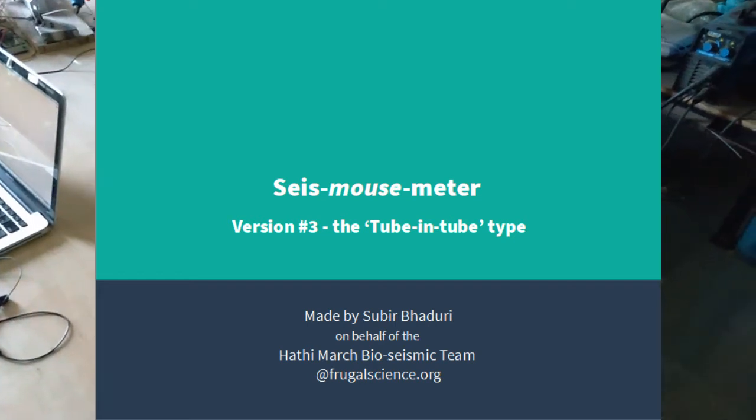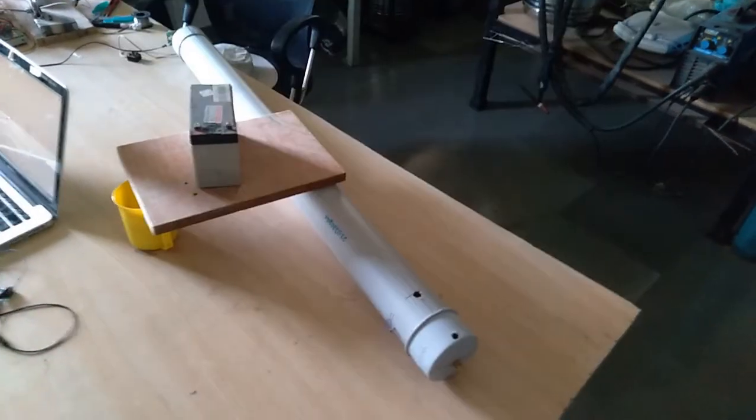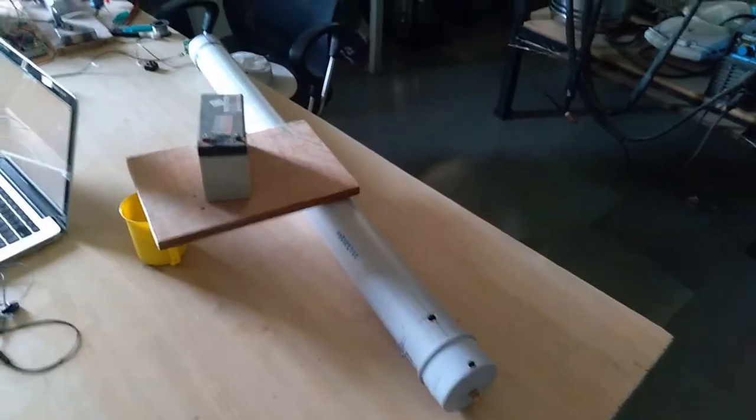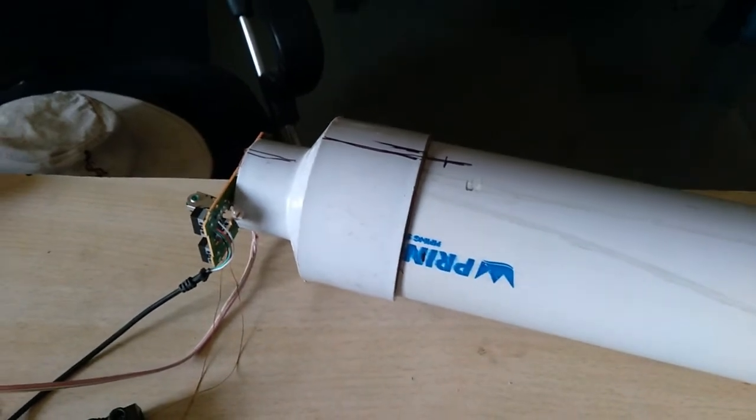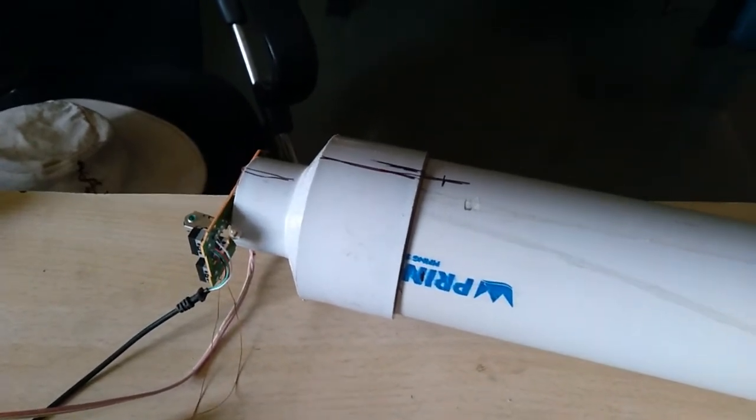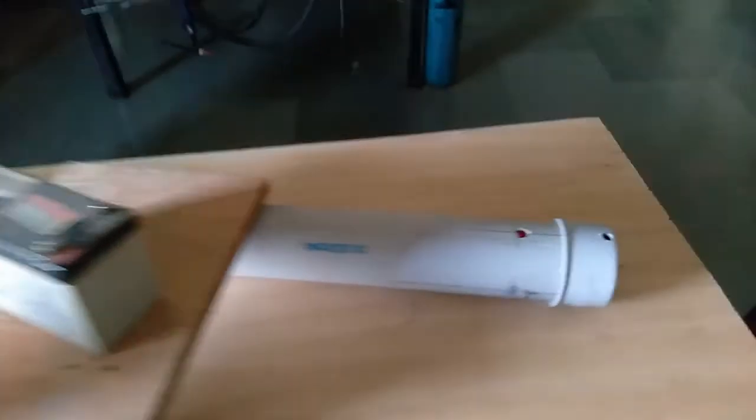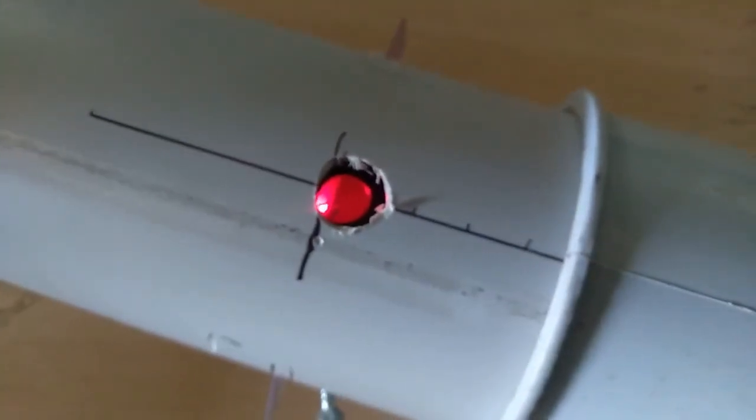This is a tube-in-tube type seismometer. On one end is a simple mouse optical circuit, and that actually receives light which is shown by a small laser, if you can see, kept here and there.